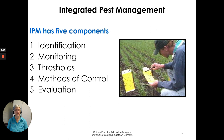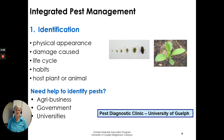IPM has five components outlined in the chapter: identification, monitoring, thresholds, methods of control, and evaluation. We'll go briefly through each of them. For identification, you need to know which pest is doing the damage. You may find the pest itself or you may just find the damage. Learning about the pests that affect a crop and their life cycle and habits will give you an idea about how to approach pest control.